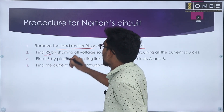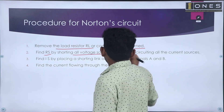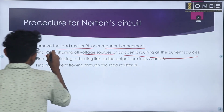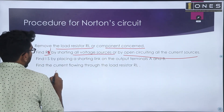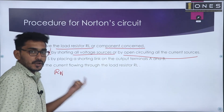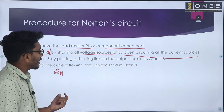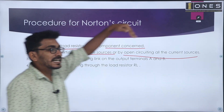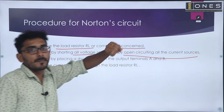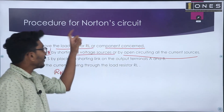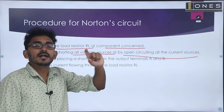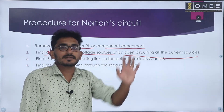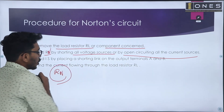Find RN by shorting all the voltage sources or by open-circuiting all the current sources. That is, we have to find RN, the Norton's resistance. To find this Norton's resistance: voltage sources are short-circuited, current sources are open-circuited. At the load resistance terminals, you can view the equivalent resistance — that is the Norton's resistance.